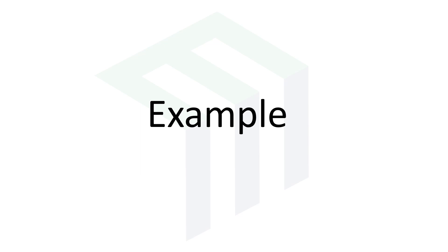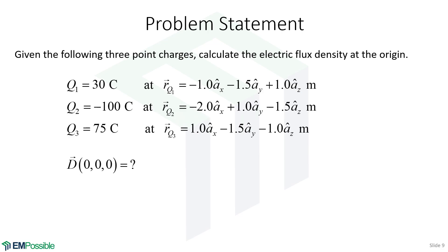Let's tie this together with an example. First we have a problem statement. We have three charges, Q1, Q2, and Q3, and each is at a different position. I would like to calculate the electric flux density at the origin. Notice I wasn't cruel. I didn't ask for the electric field intensity, so we don't actually have that second step, but the second step would be easy. We would just divide by the permittivity if we wanted that. But I'm asking for the electric flux density, so we won't have to do that.